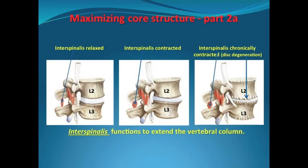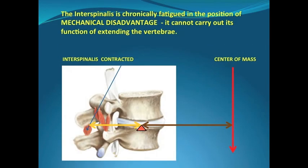Let's take a close look at exactly what the intraspinalis muscle looks like and what its job is. The intraspinalis functions to extend the vertebral column. However, if your core structure is in mechanical disadvantage, the intraspinalis is already contracted. How can it contract even further to extend the vertebrae? The answer is obvious — it cannot, and therefore it has lost its ability to function properly.